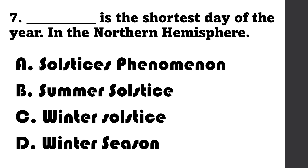Number 7: Blank is the shortest day of the year in the northern hemisphere. A. Solstice phenomenon, B. Summer solstice, C. Winter solstice, D. Winter season.